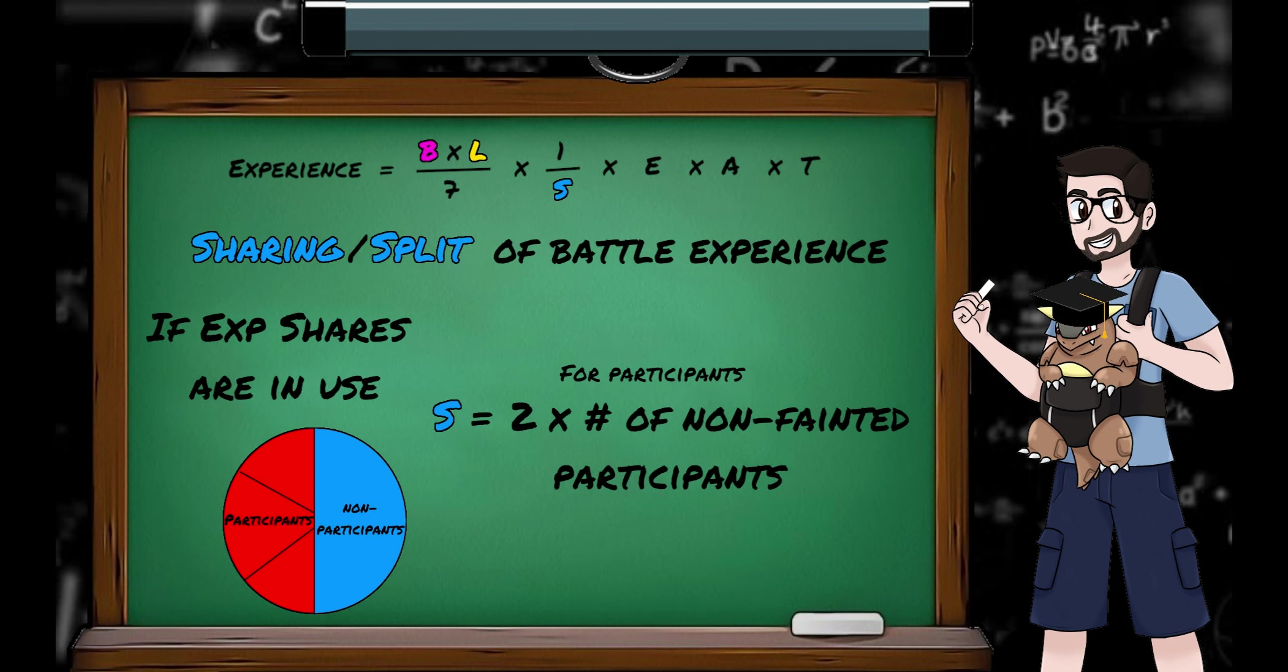So for Pokemon that have participated, S is twice the number of Pokemon that participated and haven't fainted. So essentially we split the total XP in half. One half for participants, one half for the XP share Pokemon.